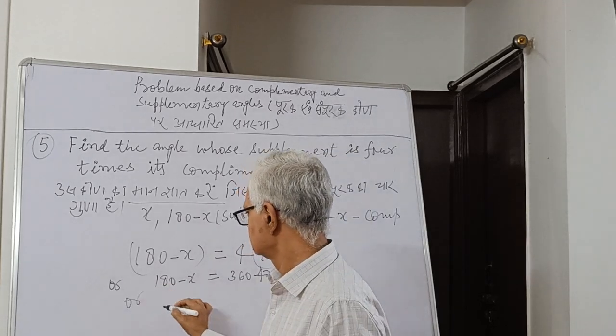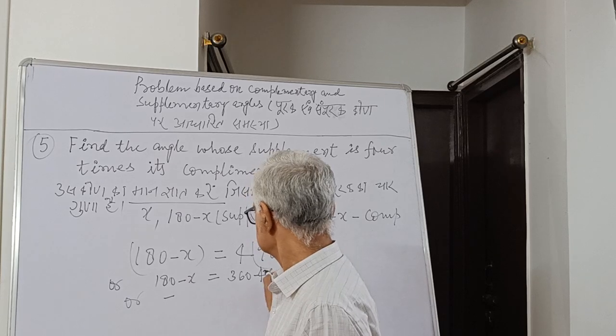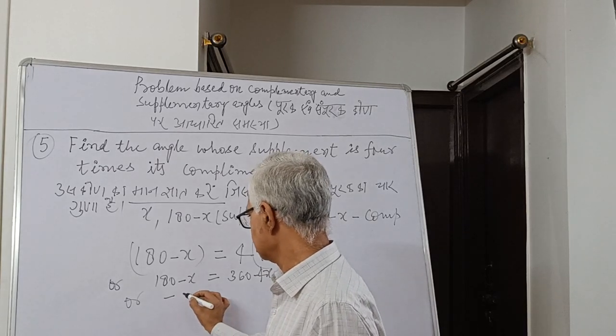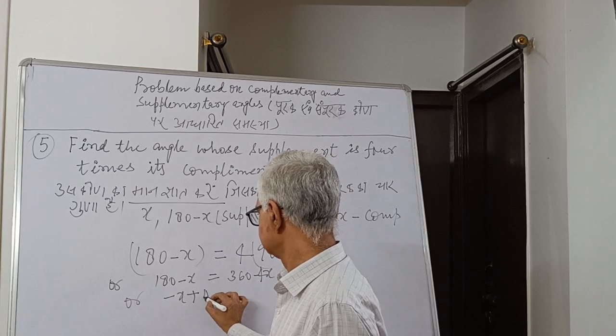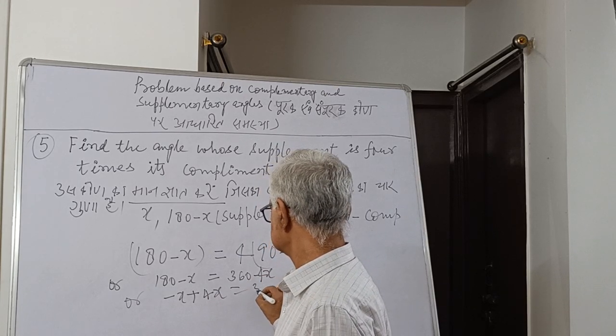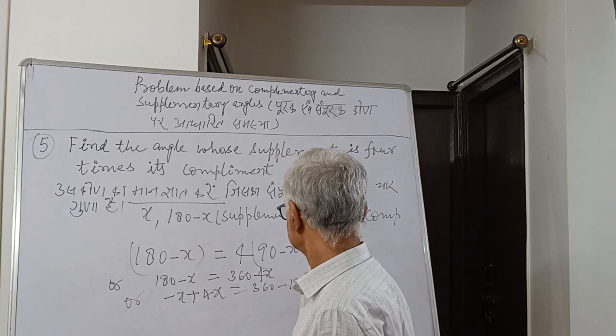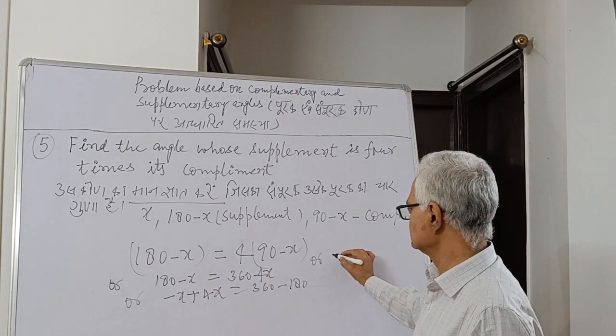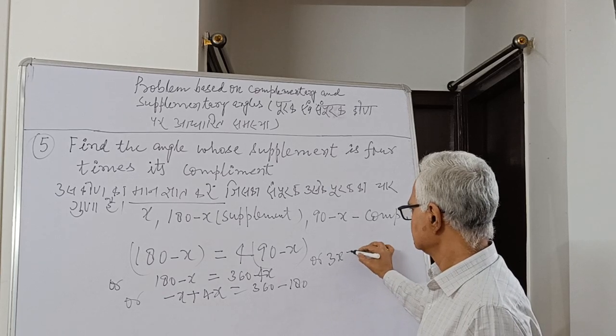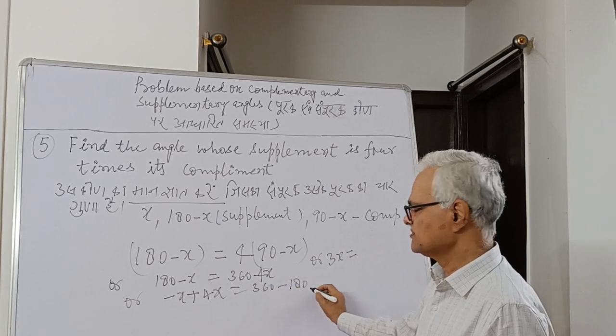Or minus x plus 4x... so 3x is equal to 360 minus 180.